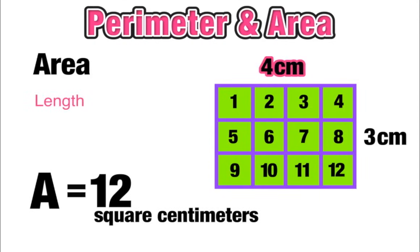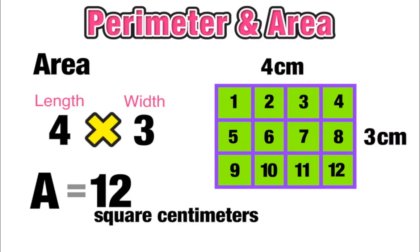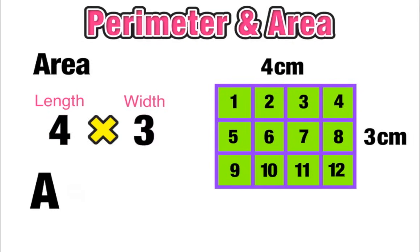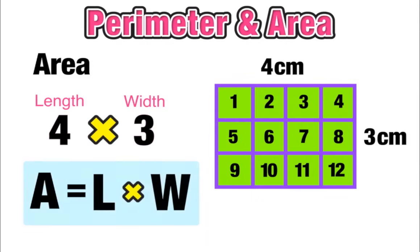Notice that the length of 4 centimeters and the width of 3 centimeters, when multiplied together — 4 times 3 — equals 12, which was our area. This rule applies to any rectangular figure: area equals length times width.